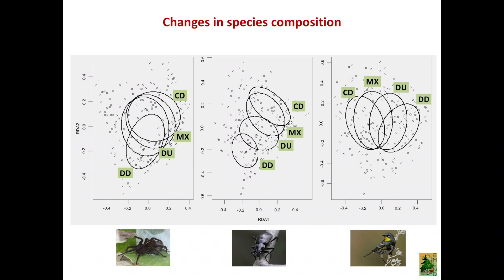Looking at forest cover type, there are differences in composition among cover types for all three taxa. Depending on the forest cover type, you have different species assemblages associated to it. For spiders, beetles, and birds alike, there is a transition in assemblage composition from deciduous-dominated stands toward conifer-dominated stands, following the traditional view of forest succession in this part of the world.